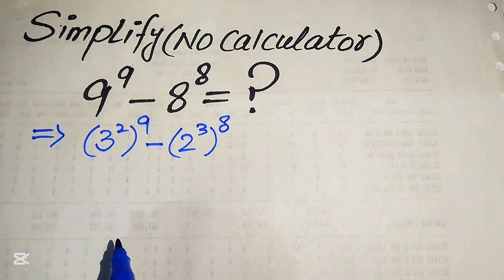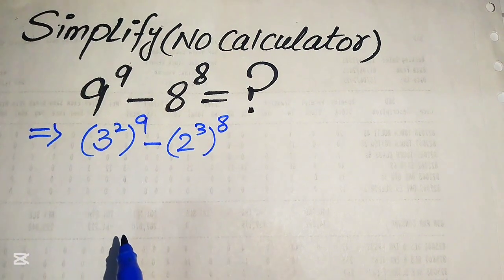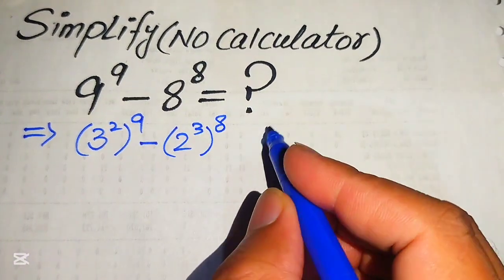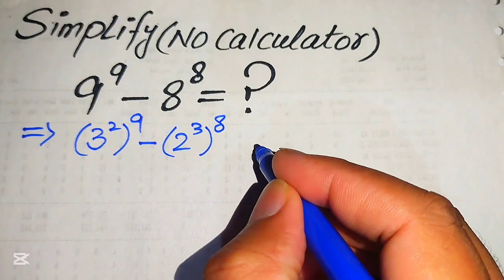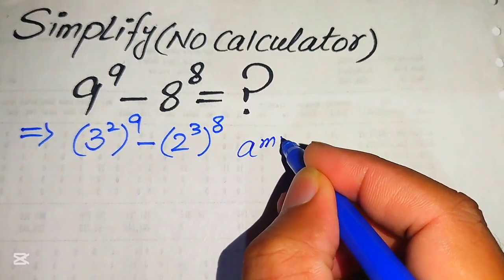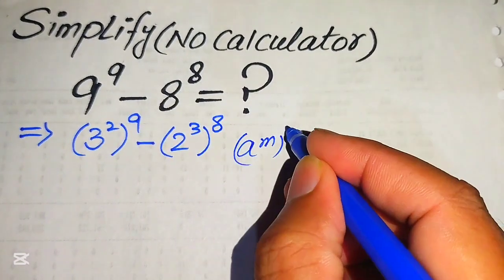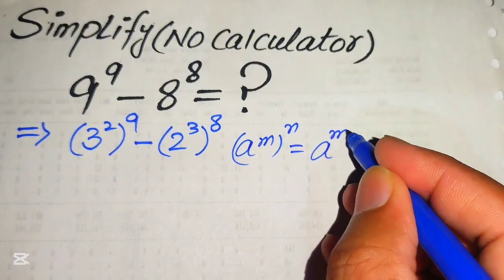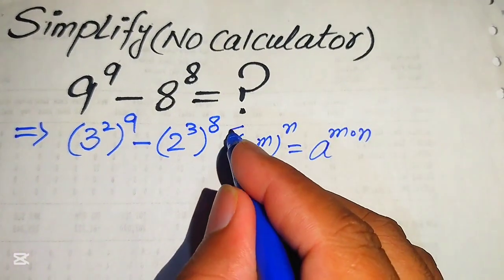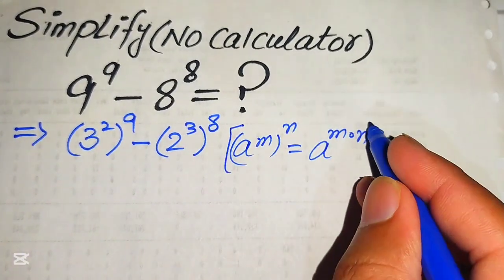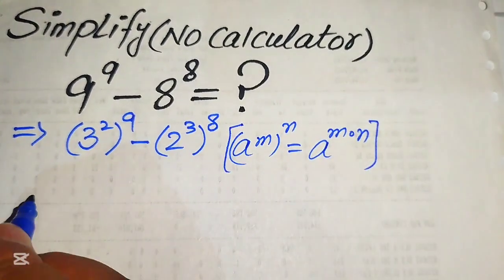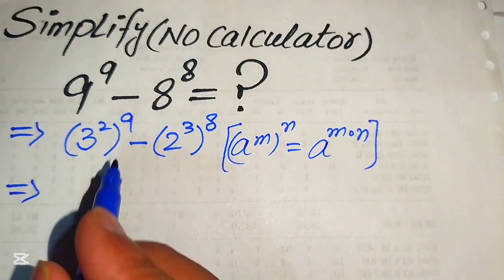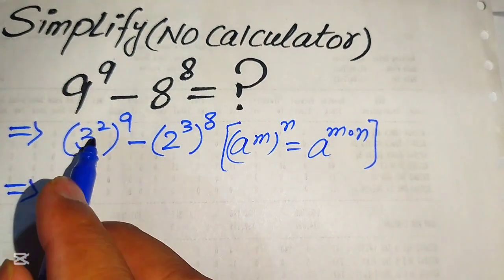In the next step we use the exponent law. We know that if we have a to the power of m, to the power of n, it equals a to the power of m multiplied by n. According to this exponent law, we need to multiply the exponents of these two terms.